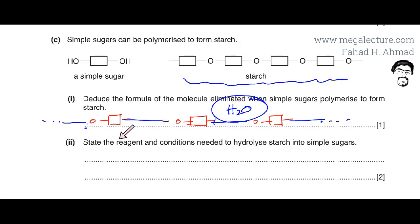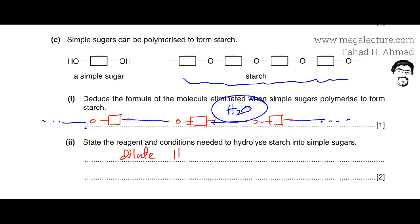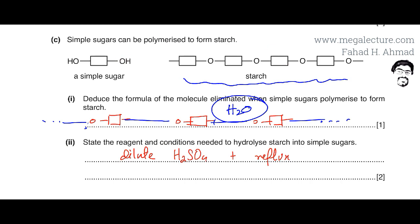The next part asks for the reagent and conditions needed to hydrolyze starch into simple sugars. In the human body, sugars are hydrolyzed by enzymes, but in a laboratory you use dilute acid — dilute sulfuric acid plus reflux. This breaks down the starch and produces simple sugar molecules again, converting starch back into simple sugars.